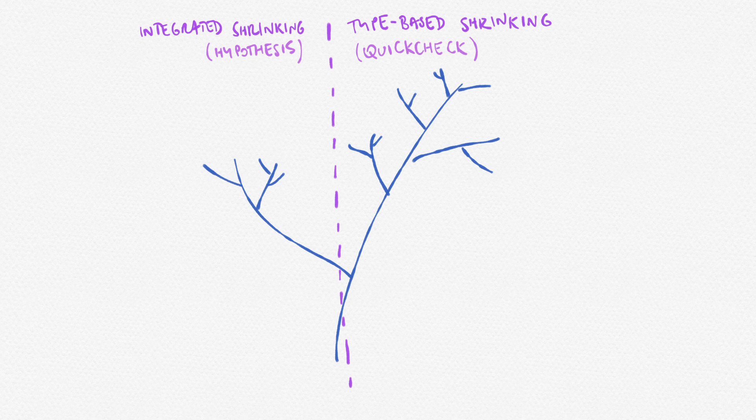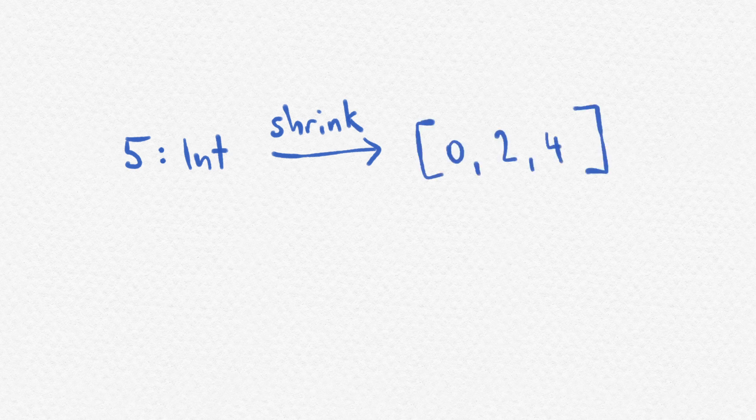A library using the type based approach does the shrinking on the generated values themselves. You can think of it as a function that takes a value and returns a list of simpler values, whatever that means for the specific type.